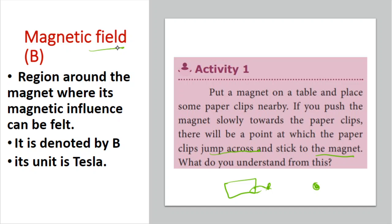The Magnetic Field is the region around the magnet where its magnetic influence can be felt. It is denoted by B and its unit is Tesla. You can recall the electric field similarly — the magnetic field is the specific region around the magnet.